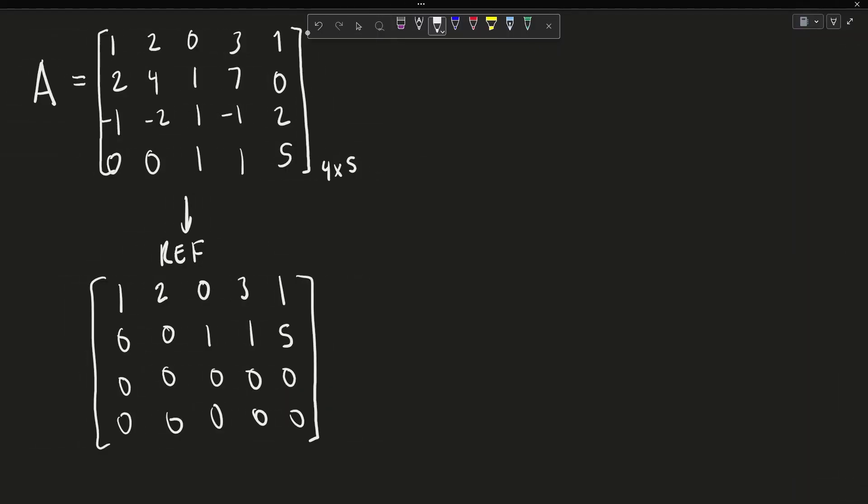This is the row echelon form of the matrix A. We can make a few key observations. First, we observe that there are two pivots in the first and second row. And second, we observe that these two rows are both zero rows, meaning they will not be included when we find our final matrix R.